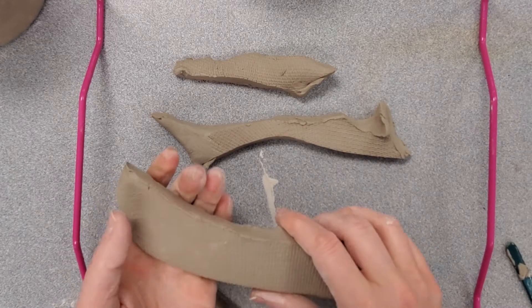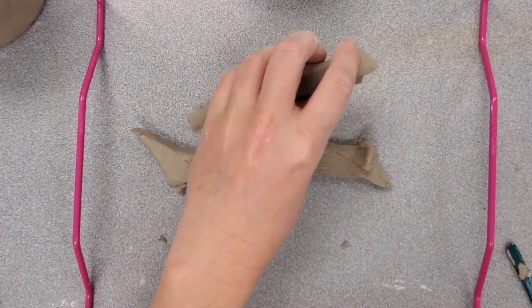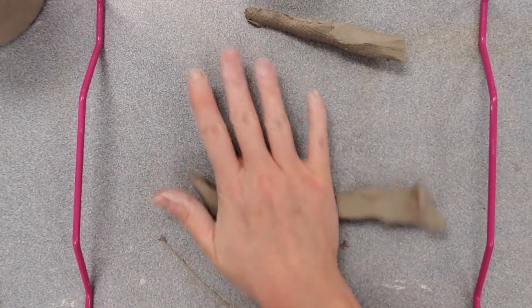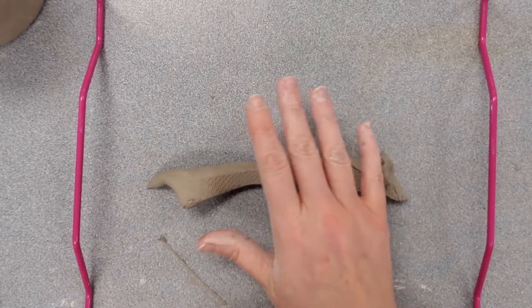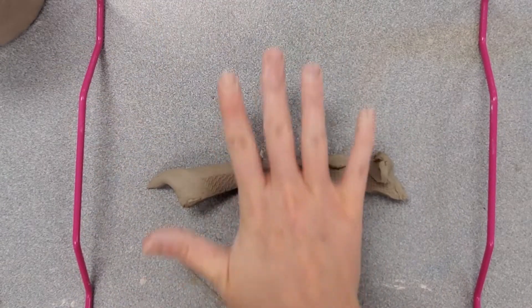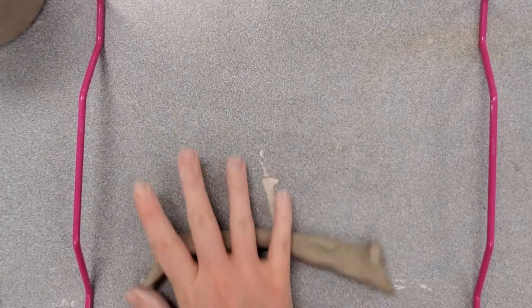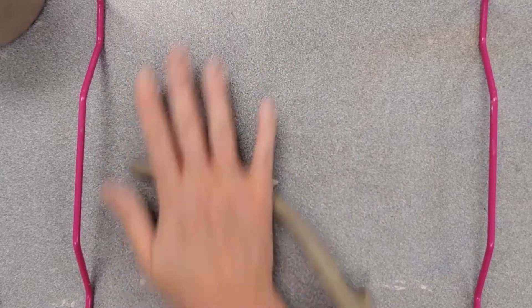Now what I'm going to go ahead and do is create a few thin coils, probably pencil thickness or thinner. When you're rolling a coil, a thin strand of clay, I am going to stiffen my palm and also my fingers here, and I'm going to roll it from the center outward. The goal with this is to create a coil of even thickness.